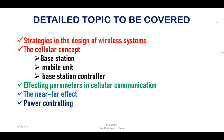The next topic covers the parameters which affect cellular communication systems. After that, we will discuss the near and far effect in case of cellular communication systems. Following this, we will address power control, which is the most important topic in cellular wireless communication — specifically, what is the need for power control in a cellular communication system.